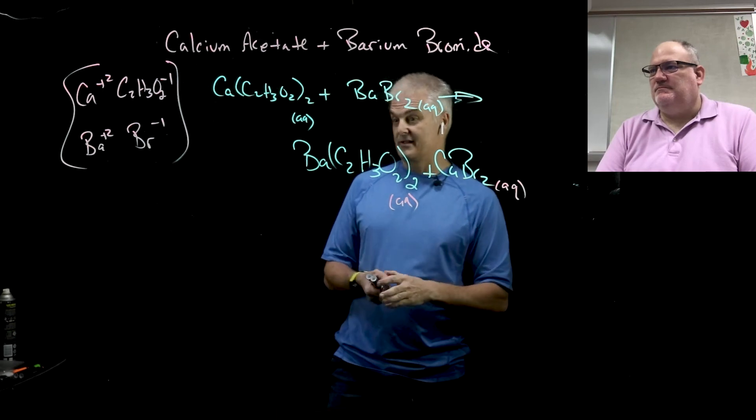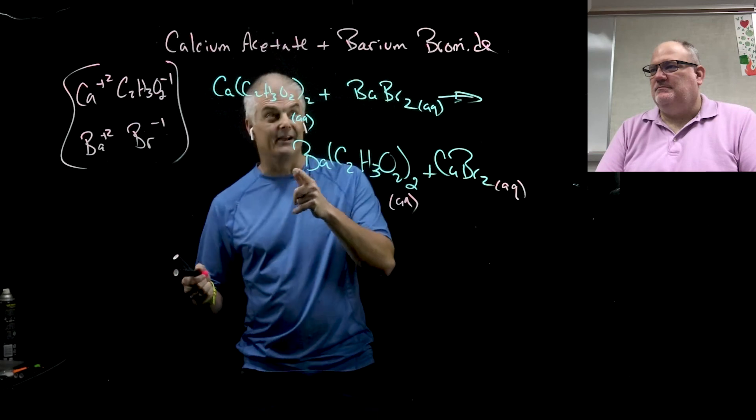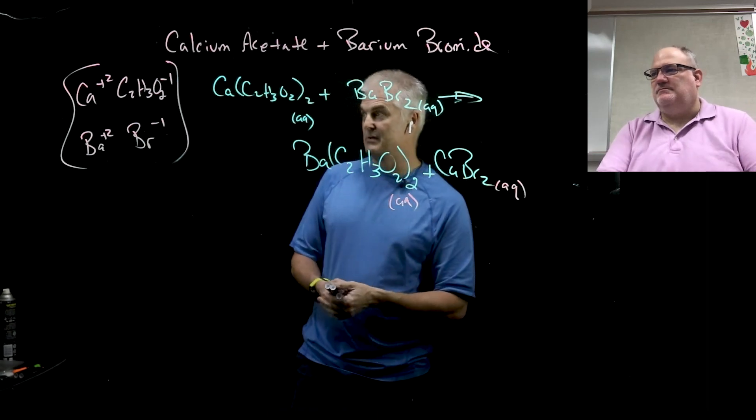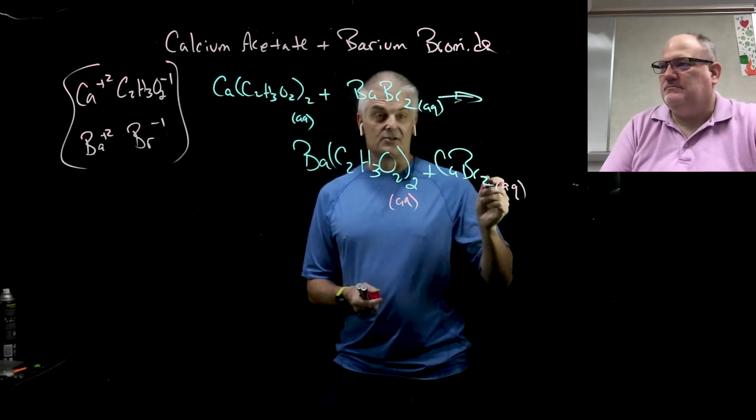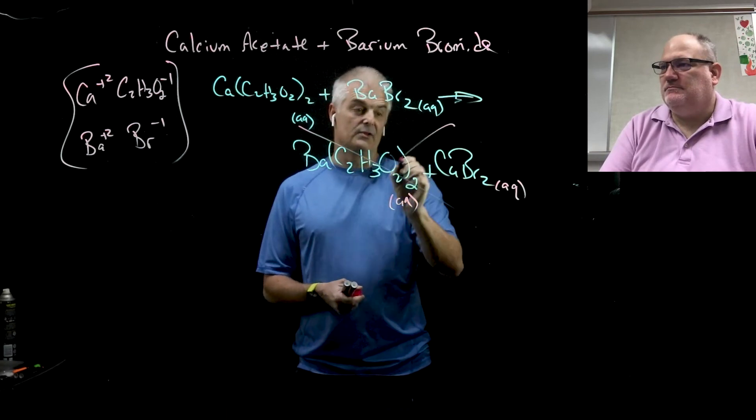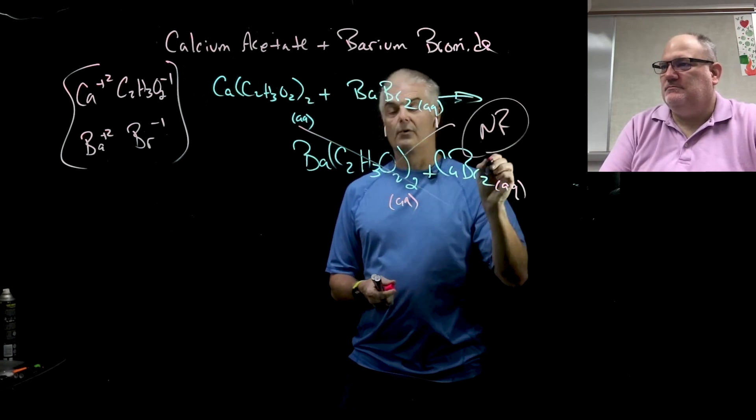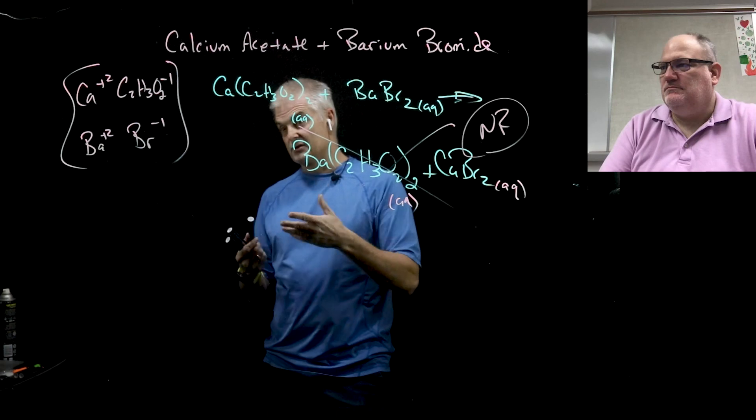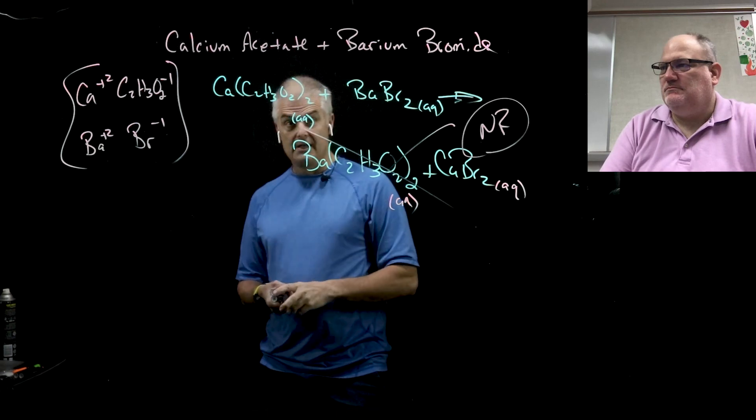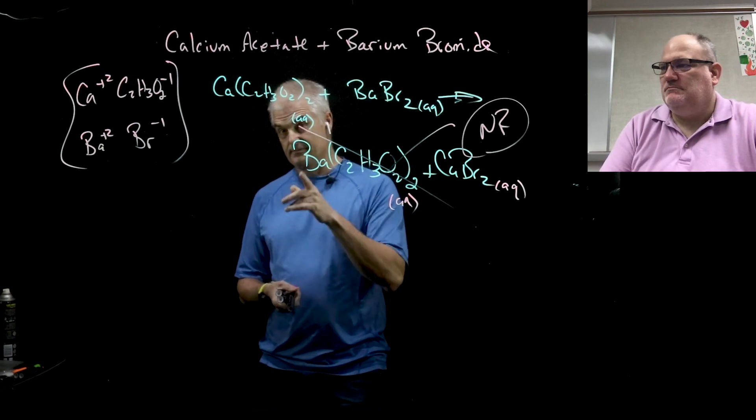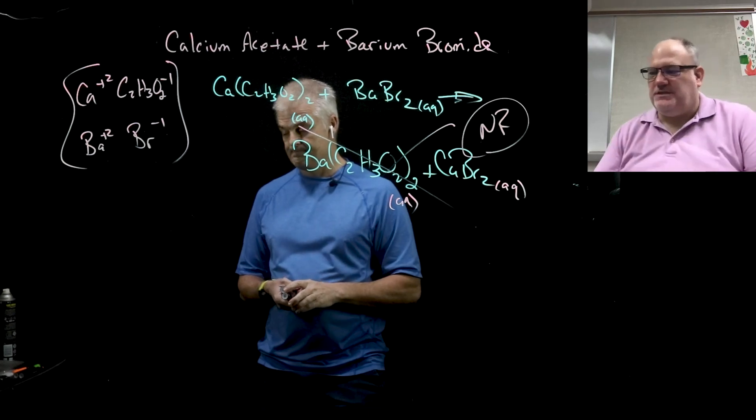They were already happy where they were so they kept their partners, so nothing happened. No one's going to be talking about this at the dance the next day because nobody traded partners. If they actually swapped like in the previous examples, then you'd be talking about who got together with who, right? So this is the answer to this one, it's just no reaction. You're going to do lots of examples in class, but that's how you do double replacement reactions. We'll see you in class.